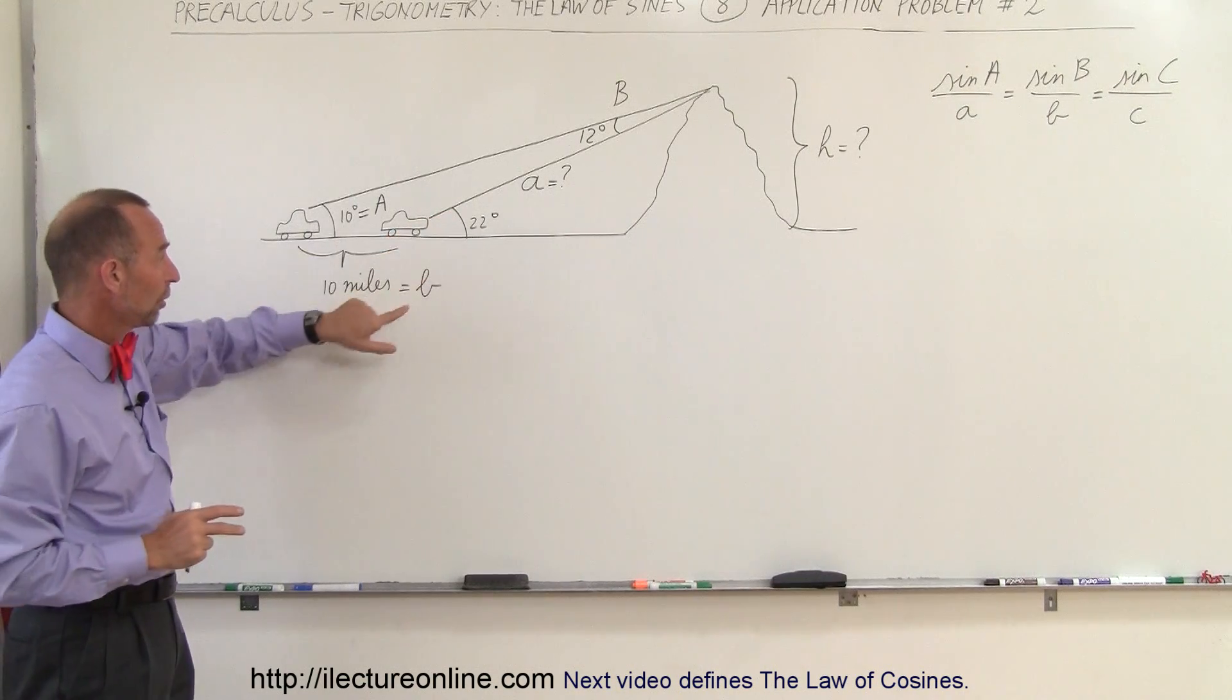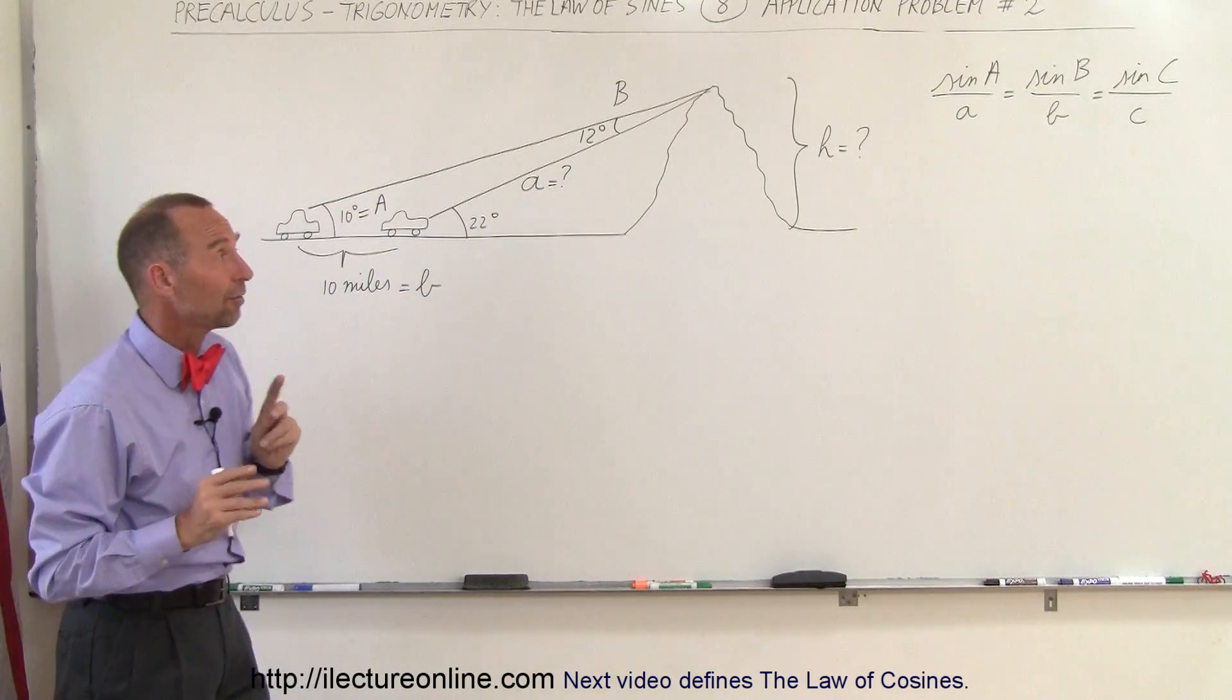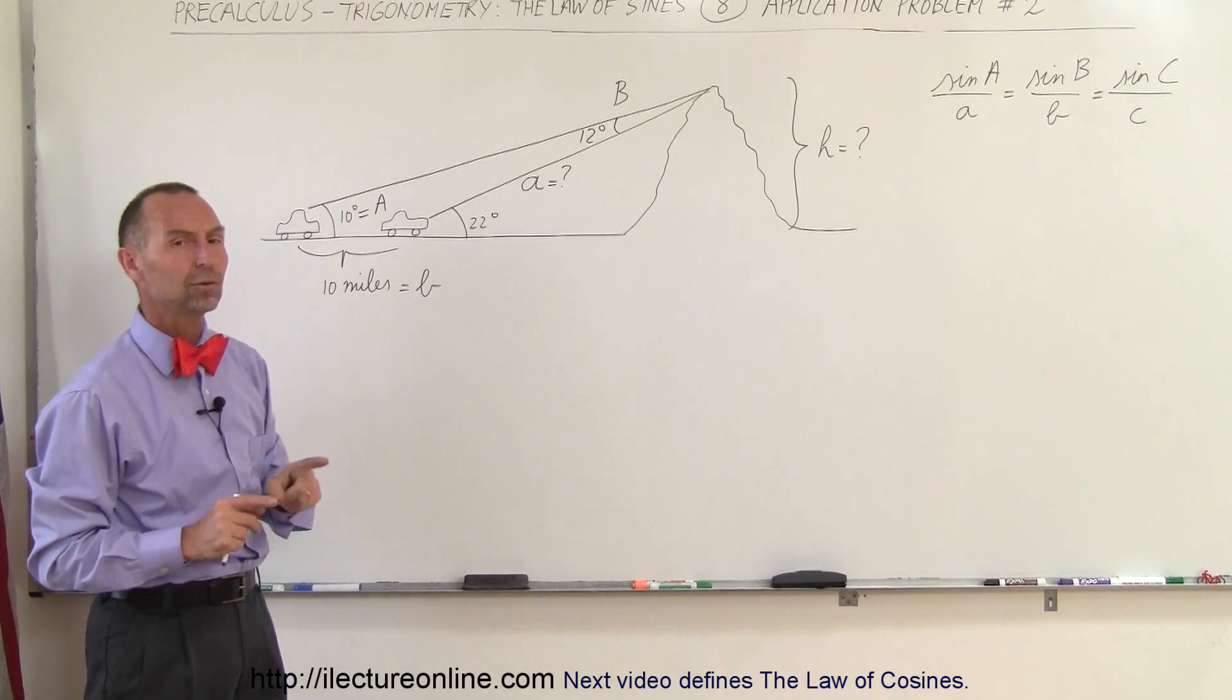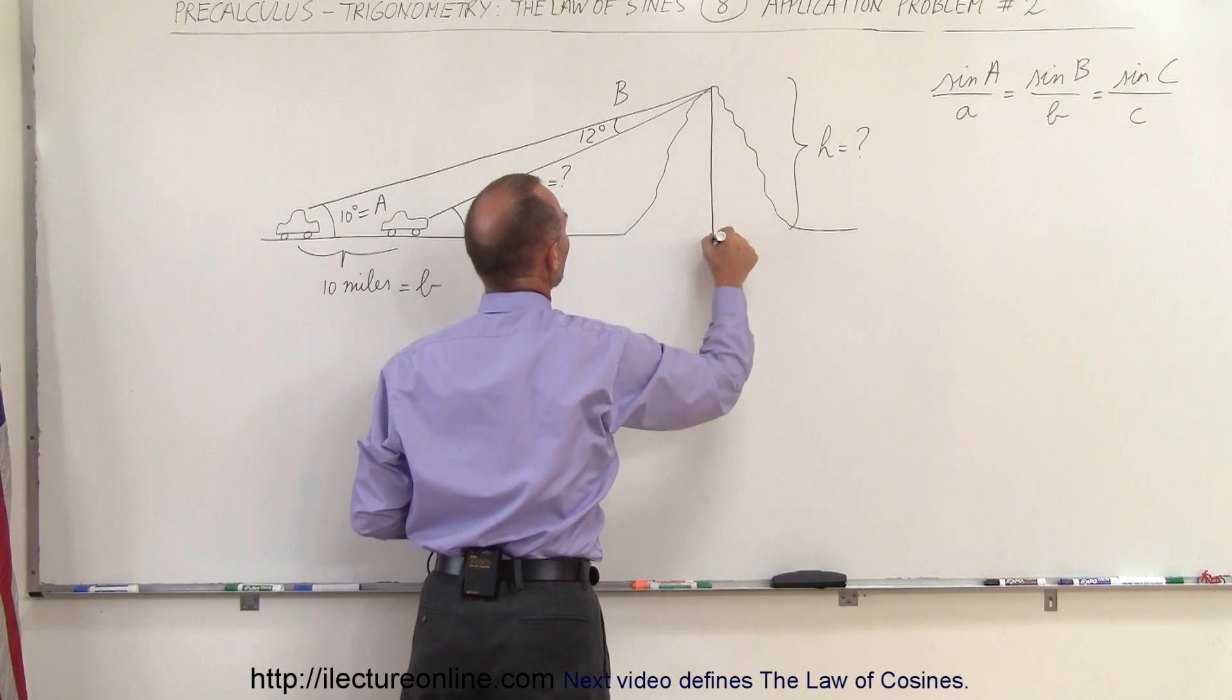Now we have side A, which we're looking for; side B, which is known; angle A, which is known; and angle B, which is known. We can use the Law of Sines to figure out what side A equals. Then we're going to realize that we have a right angle triangle.